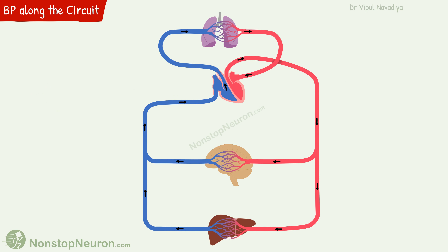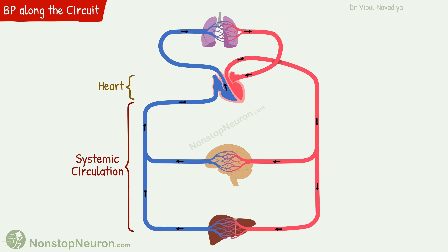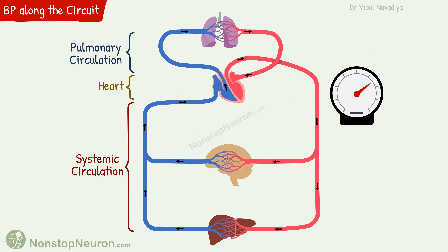This is a schematic diagram of the entire circulatory system. This is the heart. The lower part is systemic circulation and the upper part is pulmonary circulation. Let's see pressure at different points in the entire circulation.